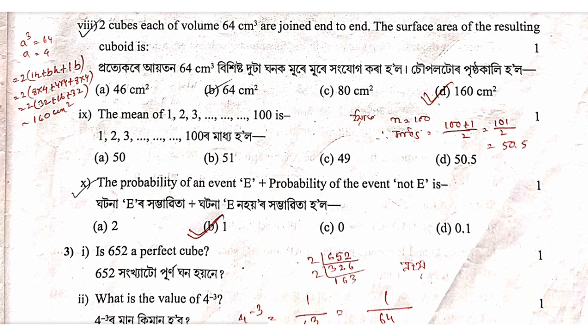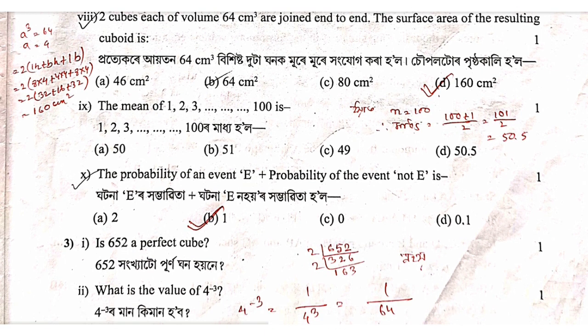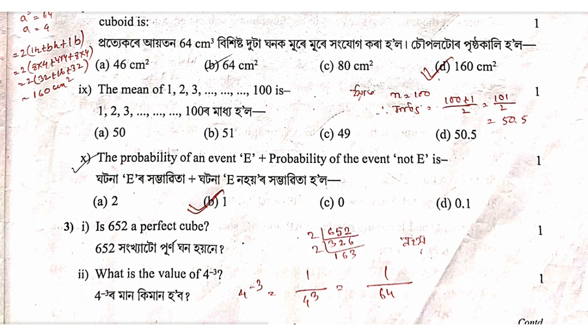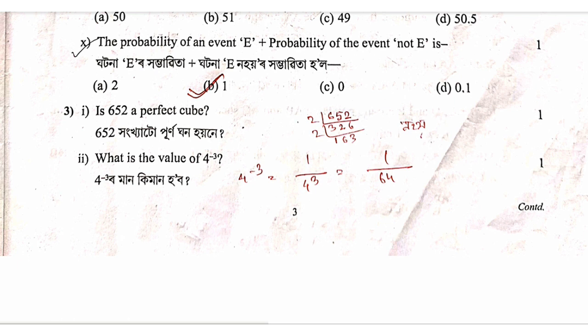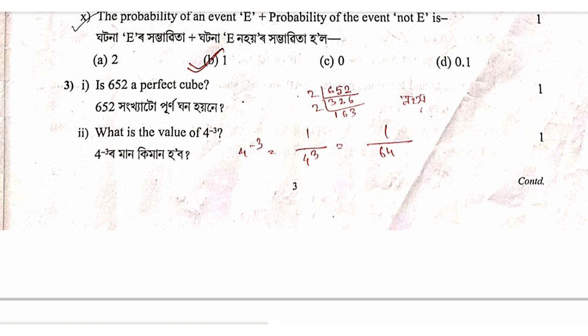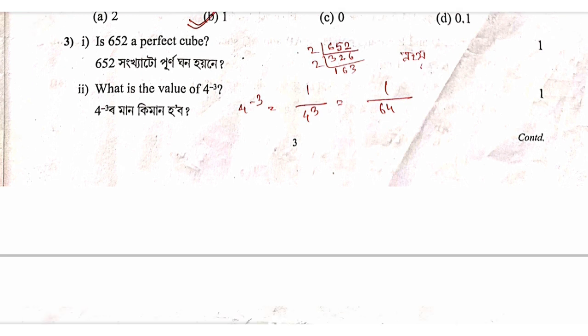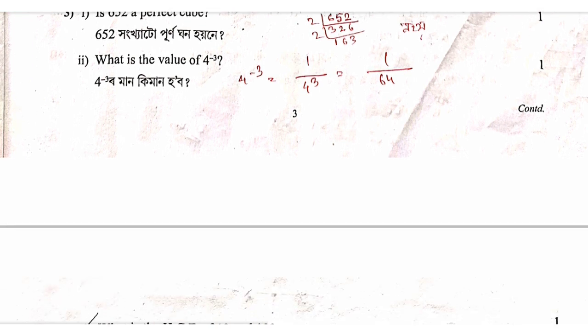The mean of the numbers 1, 2, 3 — the mean of 1, 2, 3 is calculated. The mean of the sequence involves one by four people and the answer comes to 64.